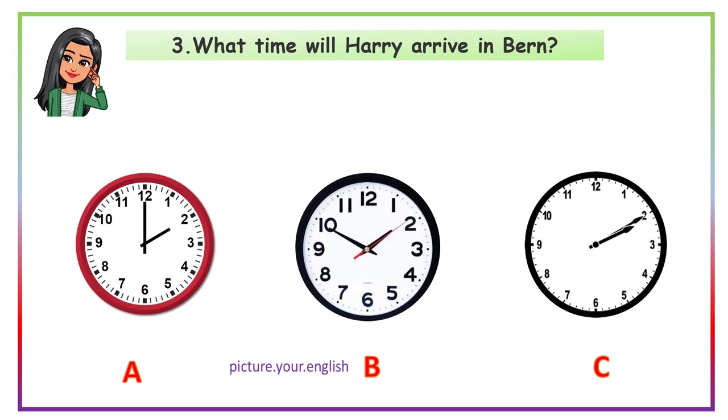What time is Harry arriving? His train is due to arrive in Bern at ten to two. Oh, so he'll get to the bus station around 2 p.m.